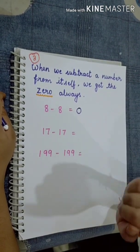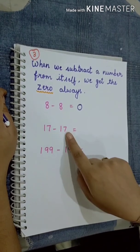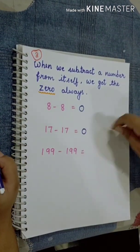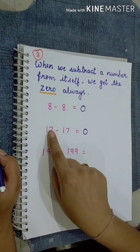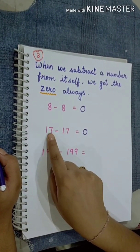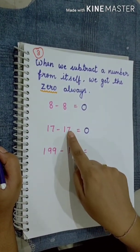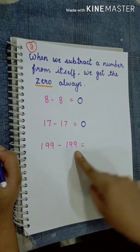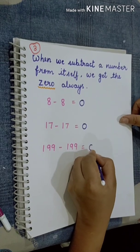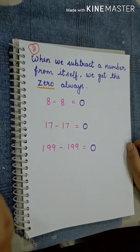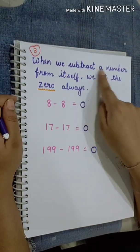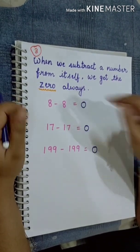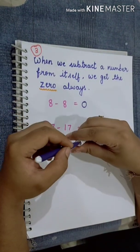The same applies to any other number. 17 minus 17 is equal to 0, because we are subtracting 17 from itself. 199 minus 199 is equal to 0. So this is proved: when we subtract a number from itself, we always get 0.